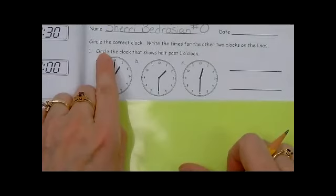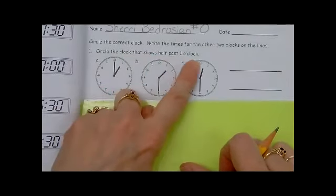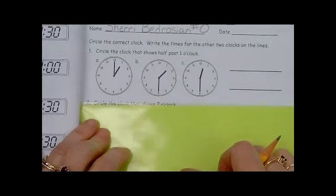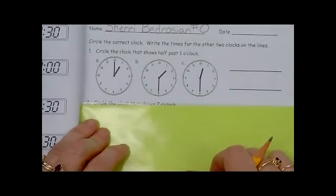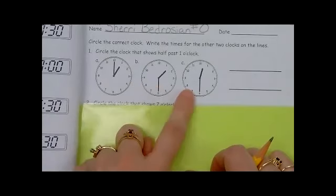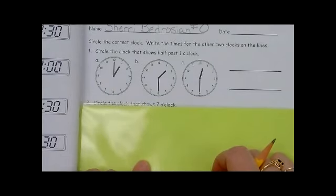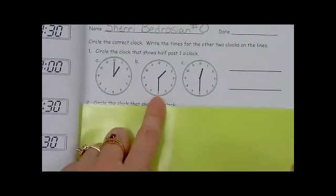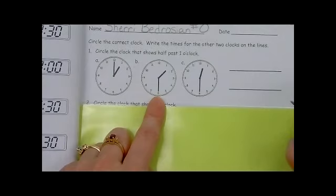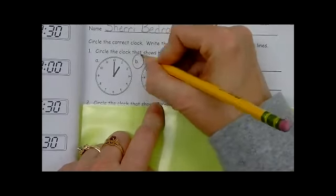So number one says, circle the clock that shows half past one o'clock. Which clock shows half past one? Is it A, B, or C? Half past one. I know it's B, so we're going to circle B.